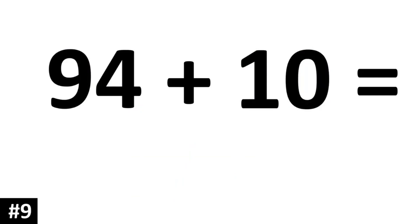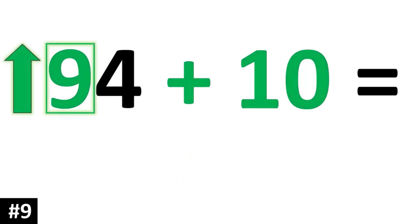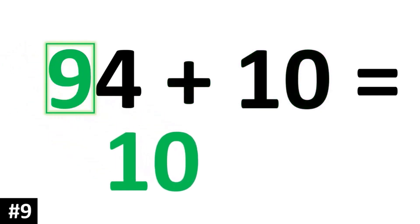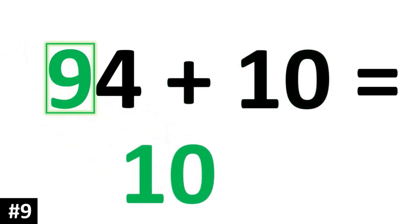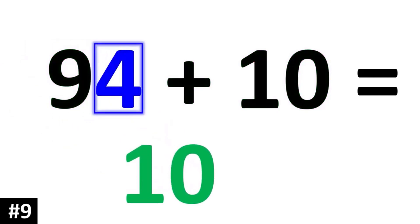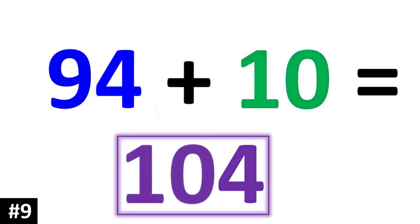94 plus 10: the tens digit of 94 is a 9, and if we go up by 1, it becomes a 10. The ones digit, which is a 4, stays the same. So we have 104.